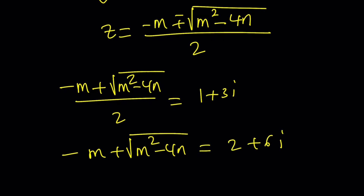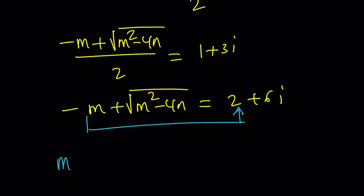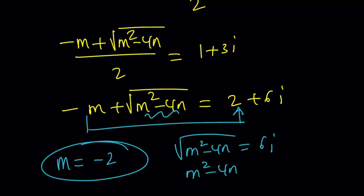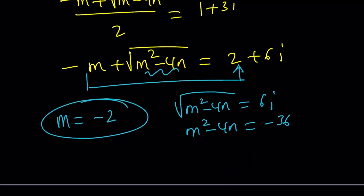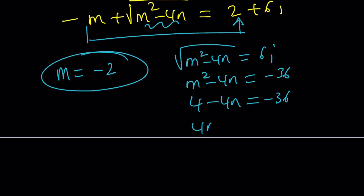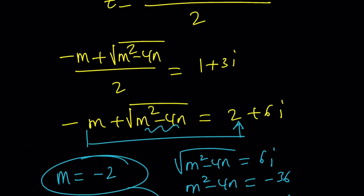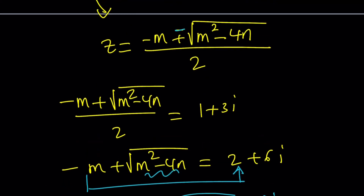Since m is a real number, the real part gives negative m equals 2, so m equals negative 2. The radical expression must equal 6i, because the only way to produce an imaginary result is by taking the square root of a negative number. Squaring both sides: m² minus 4n equals negative 36. With m equal to negative 2, we get 4 minus 4n equals negative 36, so 4n equals 40 and n equals 10. This also explains why the solutions are conjugates, due to the plus-minus sign.